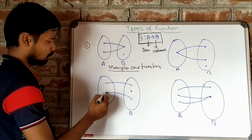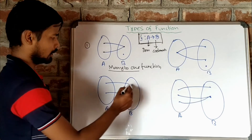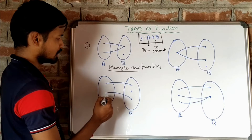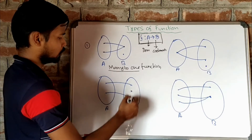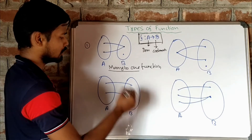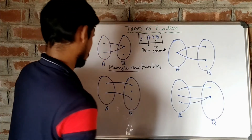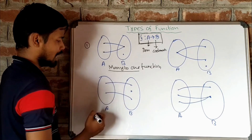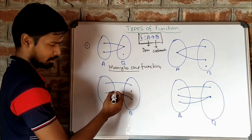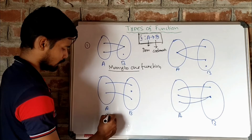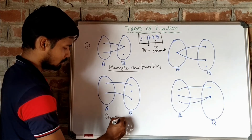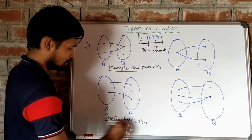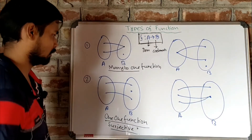Next, there are two elements in the domain set and three elements in the codomain set. These two distinct elements map with two distinct elements of the codomain set. The elements are mapped one-one, so this mapping is known as a one-one mapping or function. Number two is a one-one function.